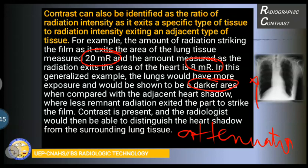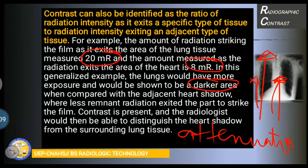Depending on the attenuation property of radiation — 20 millirentgen exiting the lung so the lung appears darker, and 8 millirentgen for the heart — there is more attenuation, a reduction of x-ray energy passing through that area. The heart area appeared lighter compared with the lungs. Therefore, there are density differences from the black area of the lungs to the white area of the heart or mediastinum, creating a chest radiograph image.